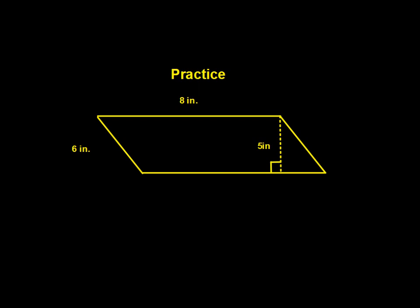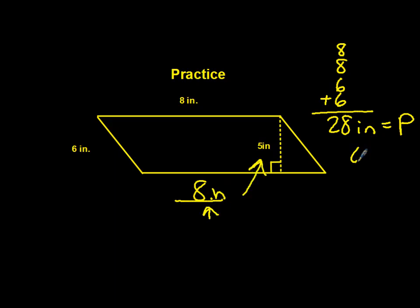Alright, we're ready to solve our practice. The first thing we'll do is figure out the perimeter. Again, we have 8 and 8 and 6 and 6, which would be 28 inches for the perimeter. And then to figure out our area, we know it's the base, which is here, times the height of 5. So we have 8 times 5, which is 40 inches squared. And that is equal to your area.